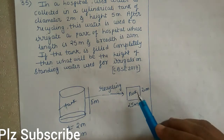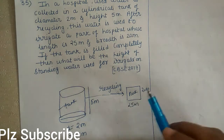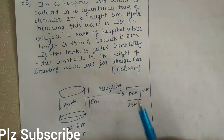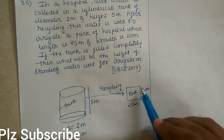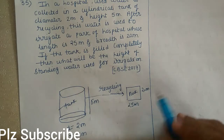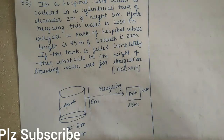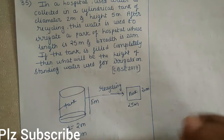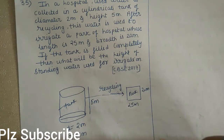Standing water for irrigation means: when we pour water into the park for the plants, the water will fill up to some level in the park. We need to find up to what level (height) the water will fill in the park when we transfer the water from the tank.